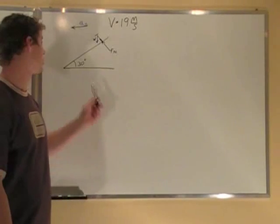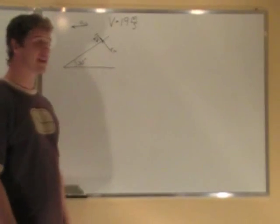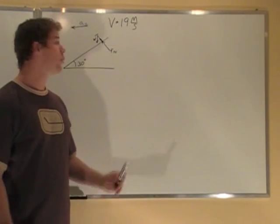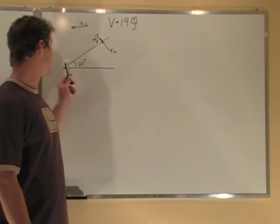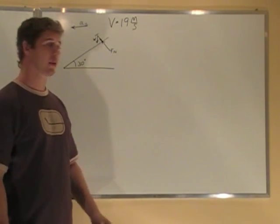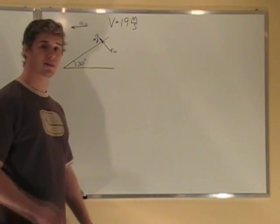A cyclist is going around a banked curve at a velocity of 19 meters per second, and the curve is banked at 30 degrees. We want to find out at what distance out, what the radius of this is going to be so that he has no friction acting on him in a lateral direction.